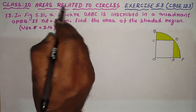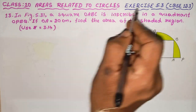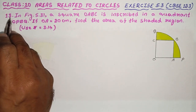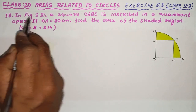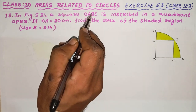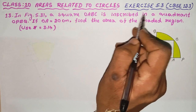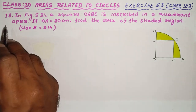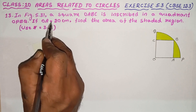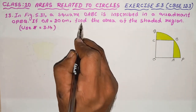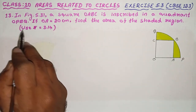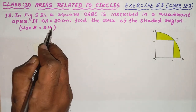Class 10, Areas Related to Circles, Exercise 5.3, 13th problem. In figure 5.31, a square OABC is inscribed in a quadrant OPBQ. If OA is equal to 20 cm, find the area of the shaded region. Use pi is equal to 3.14.